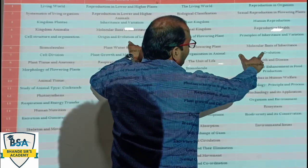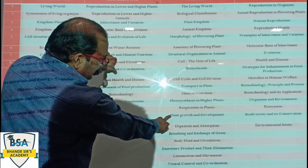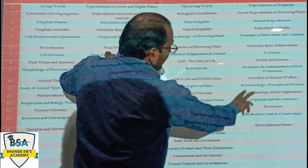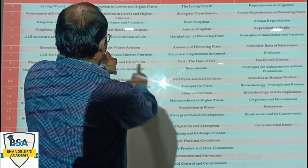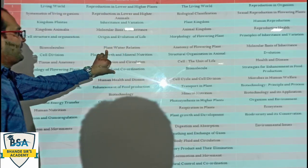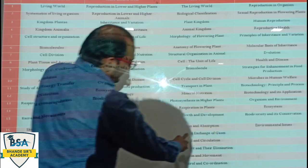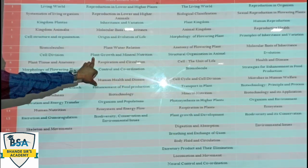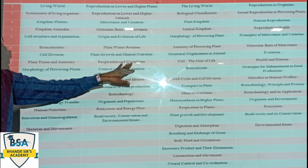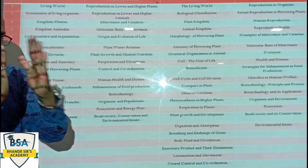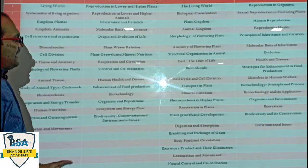उसके बाद Evolution of Life है। और Plant Water Relation — यह भी हमने देख लिया था। Plant Water Relation — so Plant Water Relation is here. Transport in Plants and Mineral Nutrition — this unit is Plant Growth and Mineral Nutrition, so Mineral Nutrition is here, and Plant Growth and Development. Then Respiration and Circulation — this unit is also here. According to the old syllabus, this unit is something different, and here it is combined. Control and Coordination — here it is Neural Control and Coordination.